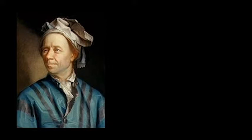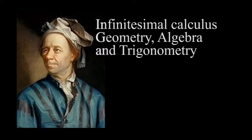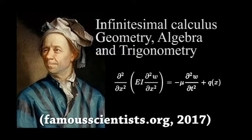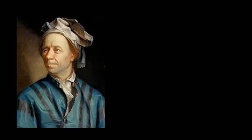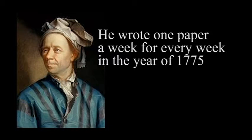Euler worked in all branches of mathematics, including infinitesimal calculus, geometry, algebra, and trigonometry. He was the first to present the concept of a function-like notation of a trigonometric function, along with introducing many notational conventions, and he contributed to the engineering field immensely through his Euler-Bernoulli equation. In the end, he would lose sight in his remaining eye with a failed cataract operation in 1771. However, his blindness never got in the way of his career. He had an excellent memory and exceptional mental ability that made up for his lost eyesight. He wrote one paper a week for every week in the year of 1775.